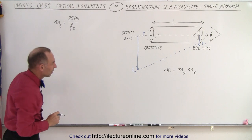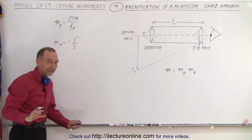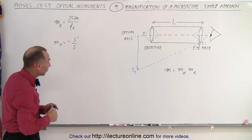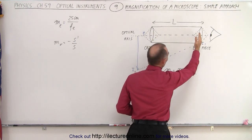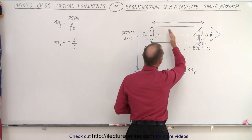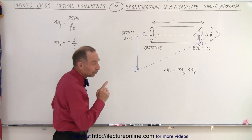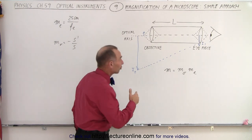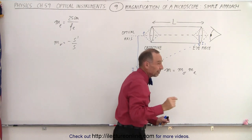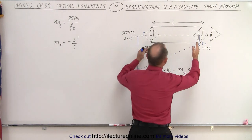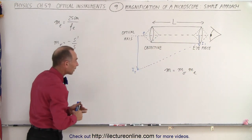What about the objective? The magnification of the objective is going to be equal to minus S prime over S — the general equation for magnification of a lens — where S prime is the image distance from the lens. For simplicity, we're going to assume that the image distance falls right at the back of the microscope where the eyepiece is, letting L, the length of the tube, equal the image distance. That's a good approximation because typically the image falls right inside the focal point of the eyepiece, and since the focal length of the eyepiece is very small, it doesn't make much difference.